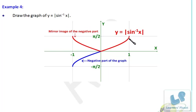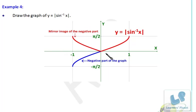We are having the graph of some f(x). We have to cut the part that is below the x-axis and take the water image of it — or the mirror image along the x-axis. This part is converted like this — just a turn we have to give along this axis. This is what the graph of |f(x)| looks like.